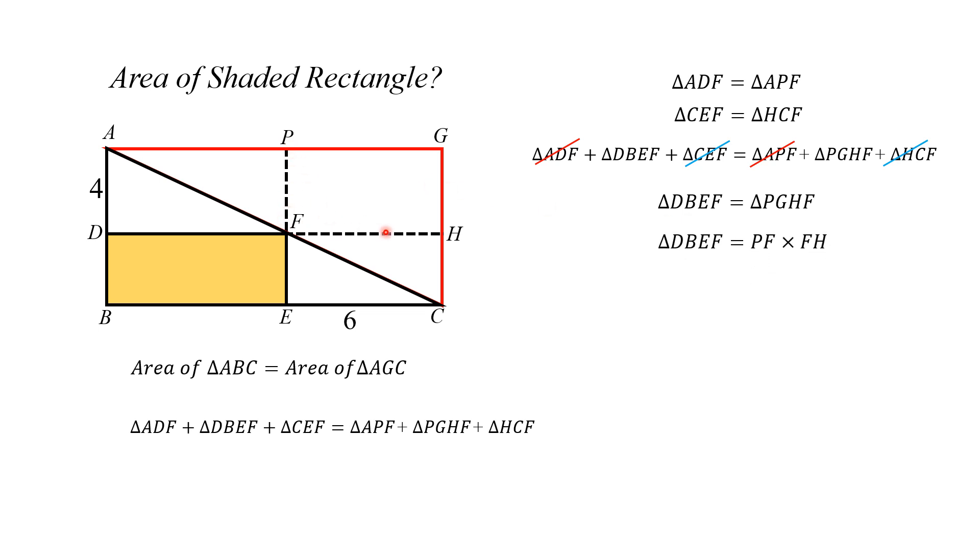Means this area DBEF is equal to length times breadth, PF times FH. So PF is equal to 4 and FH is equal to 6, because these two line segments are equal to 4 and 6, which is equal to 24 square units. Thus this shaded region's area is equal to 24 square units and that is the answer.